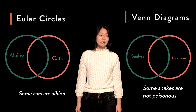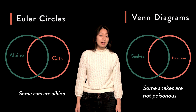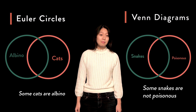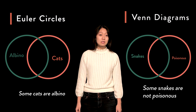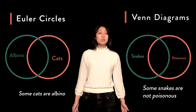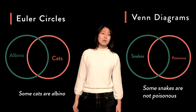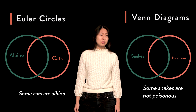On the right, we are supposed to recognize that a portion of the area in the circle labelled 'snake' is not included in the circle labelled 'poisonous.' This spatial relation represents the particular negative proposition 'some snakes are not poisonous.' Unfortunately, some confusion might arise due to the fact that there is no real visual distinction between the two diagrams.